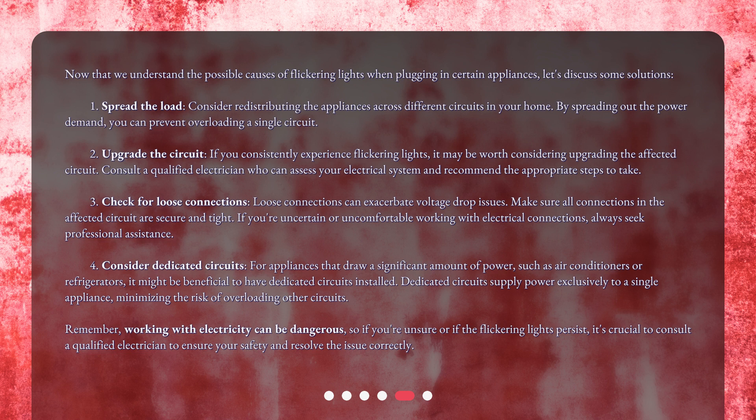Second, upgrade the circuit: if you consistently experience flickering lights, it may be worth considering upgrading the affected circuit. Consult a qualified electrician who can assess your electrical system and recommend the appropriate steps to take. Third, check for loose connections: loose connections can exacerbate voltage drop issues. Make sure all connections in the affected circuit are secure and tight — if you're uncomfortable working with electrical connections, always seek professional assistance.